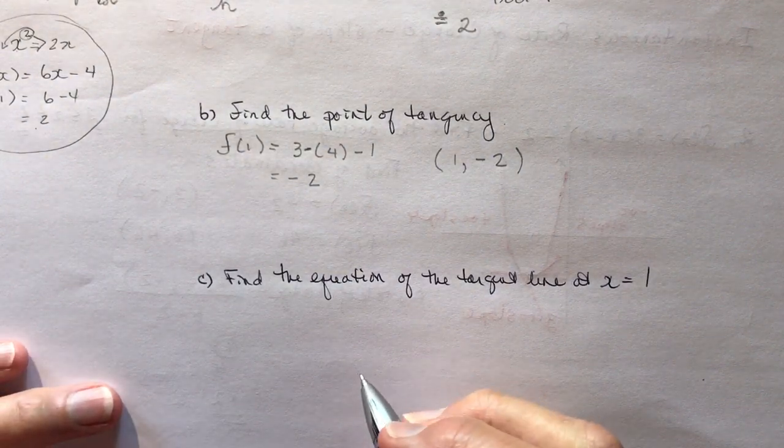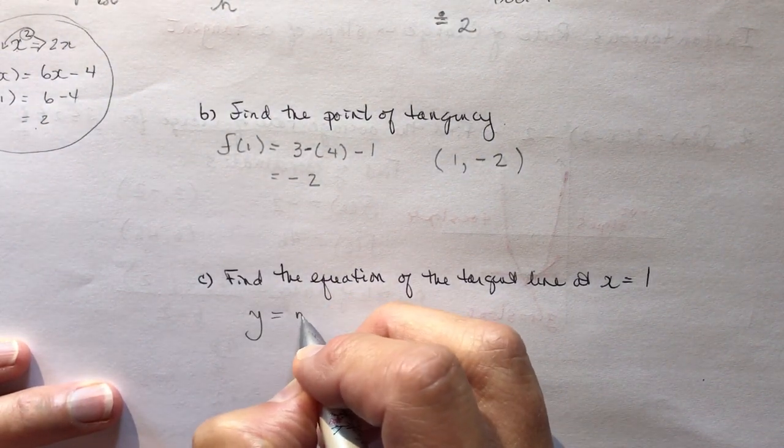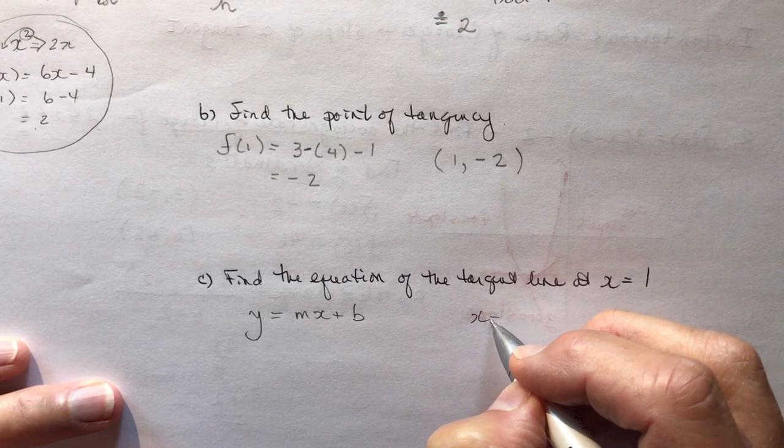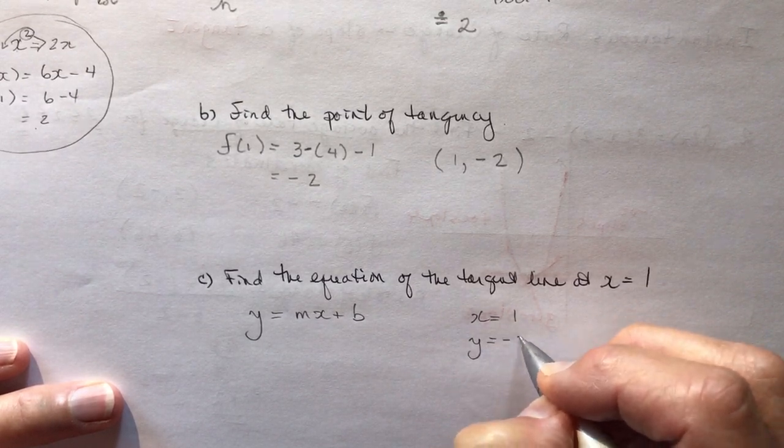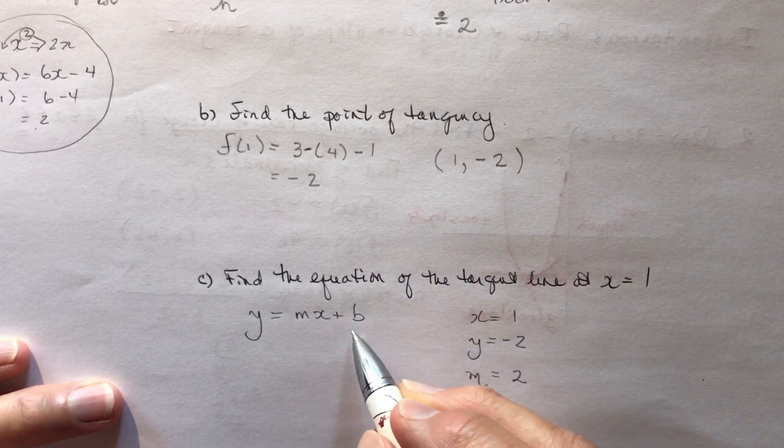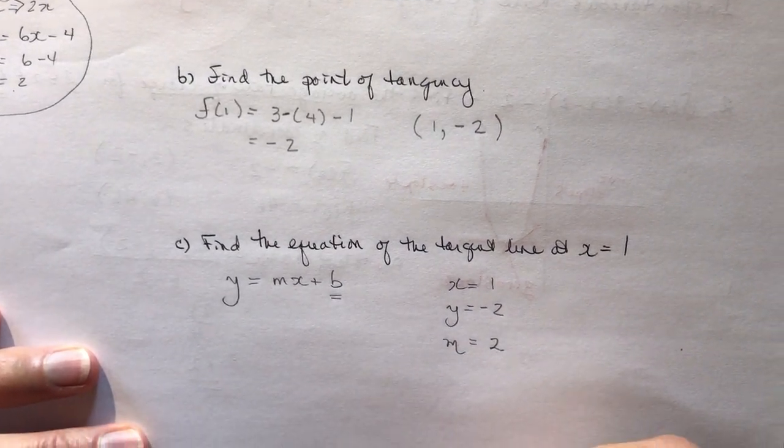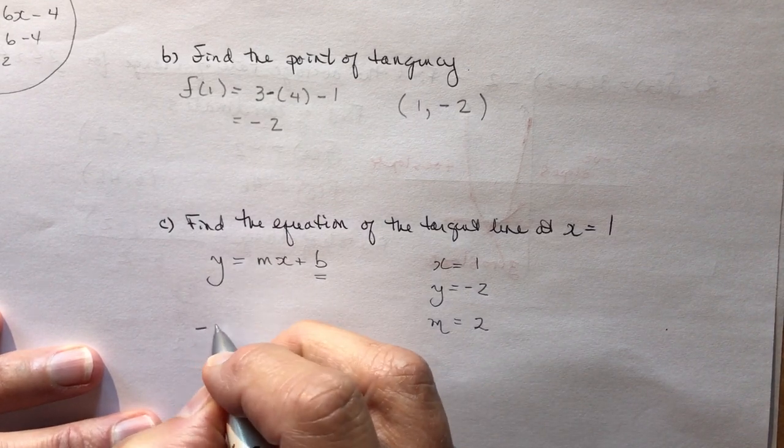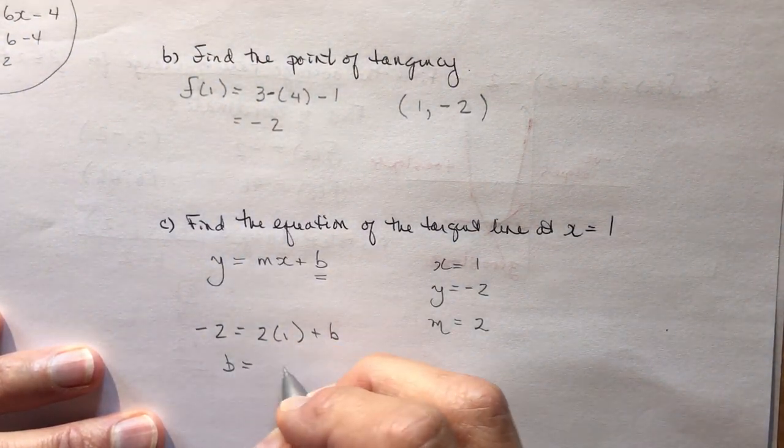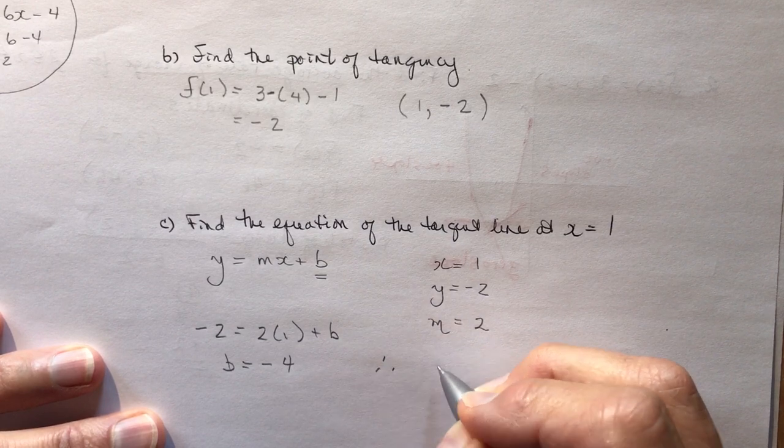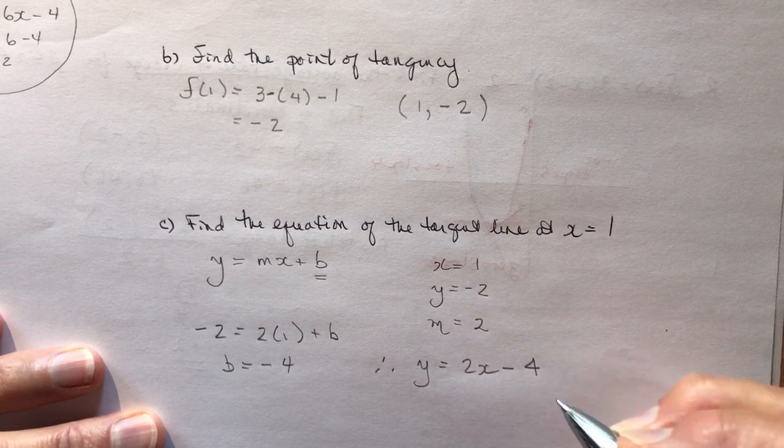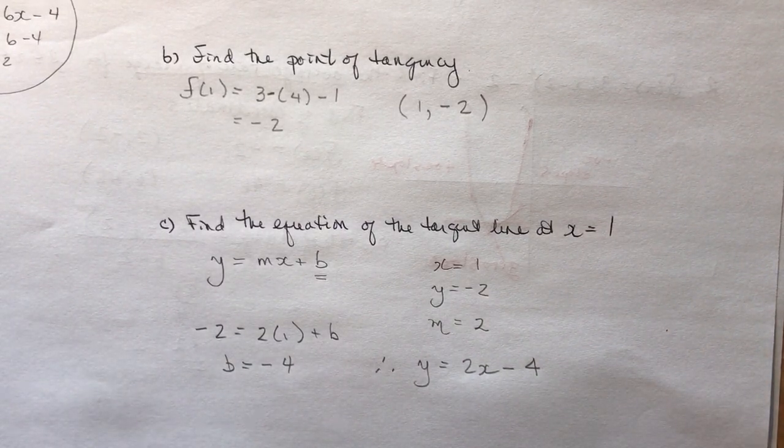Now remember how to find the equation of a line. So you're going to use y equals mx plus b. And you have a point. So my x is equal to 1. My y is equal to minus 2. And my slope is equal to 2. So those are all the things you need to find the b value. Remember doing that over and over ad nauseum? Plug it all in. So I have minus 2 is equal to 2 times 1 plus b. So that means b is going to be equal to negative 4. And therefore the tangent line is going to be y is equal to 2x minus 4. So that's how you find the equation of a tangent line.